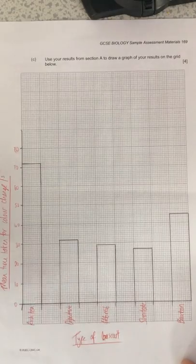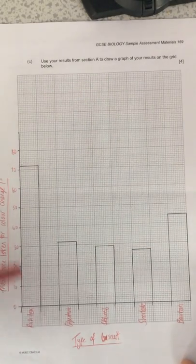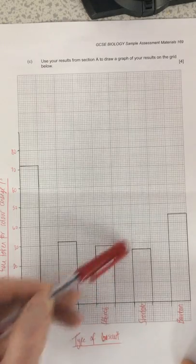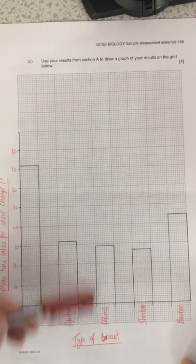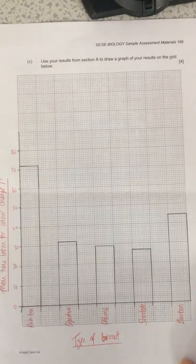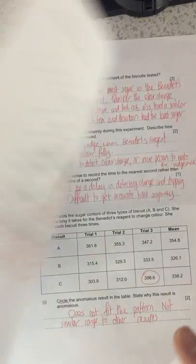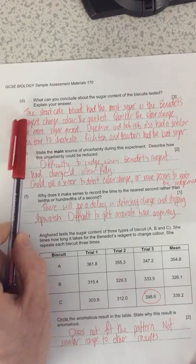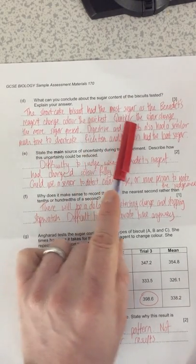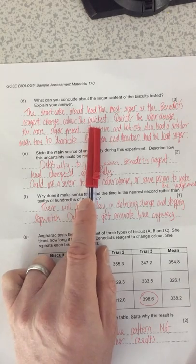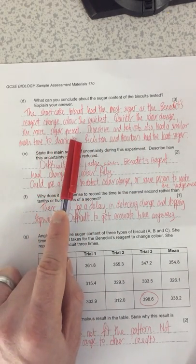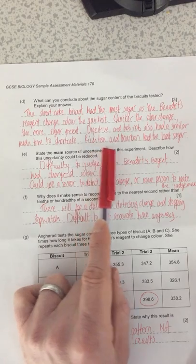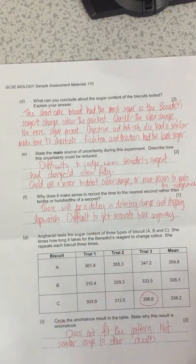From the results, the graph lets us quickly see that rich tea took the longest and shortcake took the least amount of time. So shortcake had the most sugar, closely followed by hobnobs and digestives. Bourbons and rich tea had the least sugar as they took longest for the colour change. The conclusion is: the shortcake biscuit had the most sugar as Benedict's reagent changed colour the quickest — the quicker the colour change, the more sugar present. Digestives and hobnobs had a similar mean time to shortcake, but rich tea and bourbon had the least sugar.